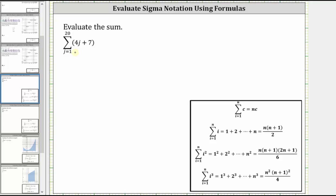Let's begin by using the properties of sums and write this sum as two separate sums. The sum from j equals one to 20 of four j plus seven is equal to the sum from j equals one to 20 of four j plus the sum from j equals one to 20 of seven.